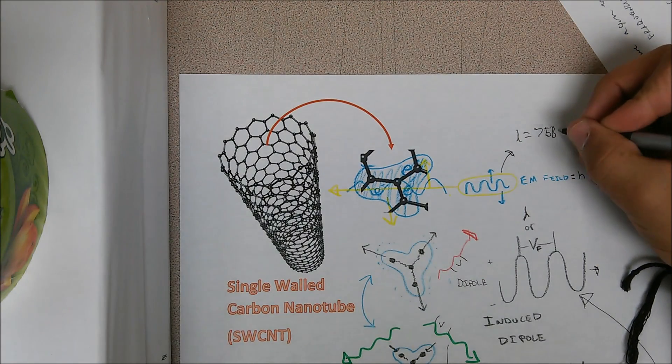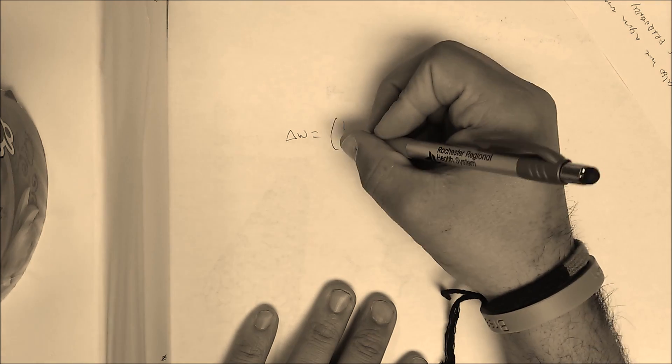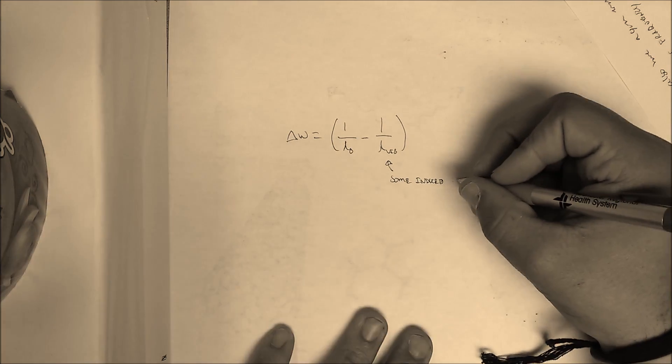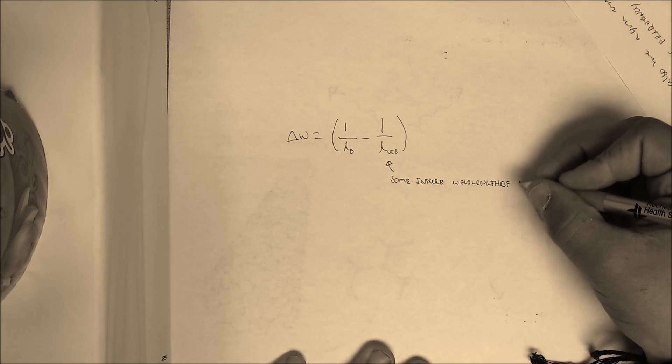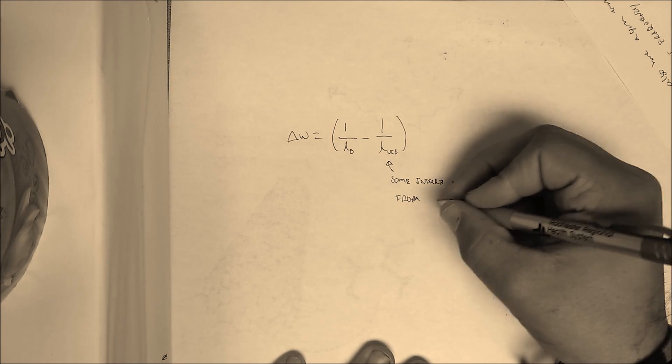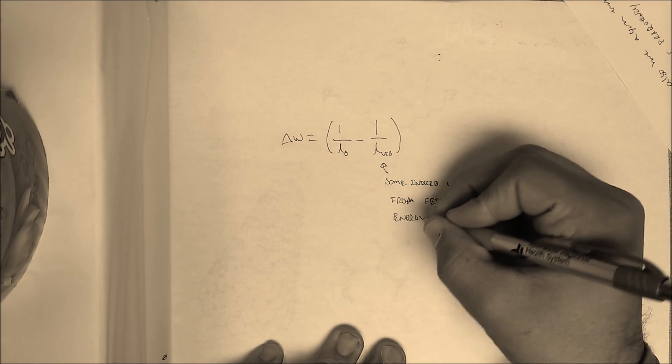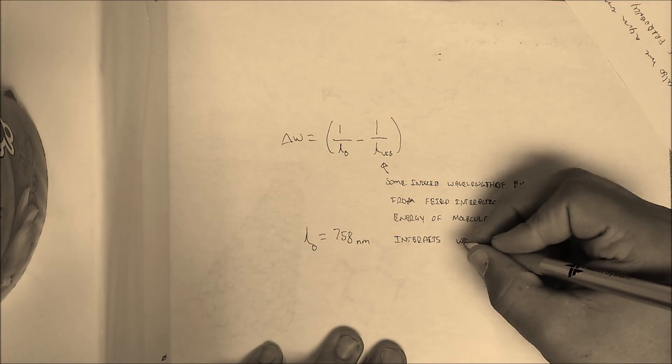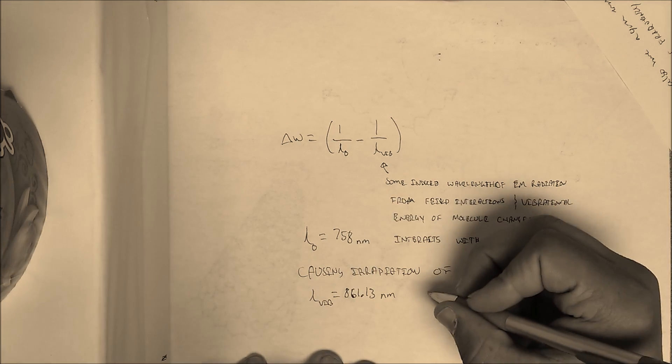So imagine you have some laser at 758 nanometers projecting into a carbon nanotube interacting with its G-band. And so you can denote this shift in wavelength from the scattered light from the incident photon's wavelength as the change in the wave number or 1 over the incident wavelength minus 1 over some induced wavelength of electromagnetic radiation from field interactions and vibrational energy of the molecule. So you have this incident 758 nanometers causing irradiation of 861.13 nanometers. That would be a wave number of 1580 inverse centimeters.